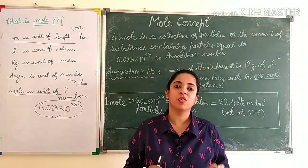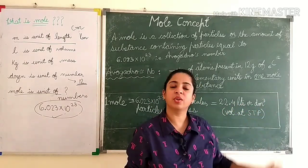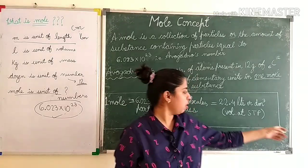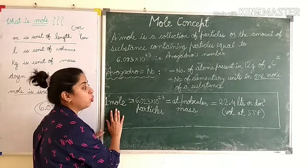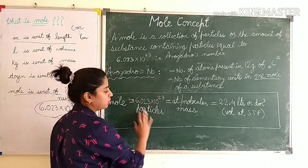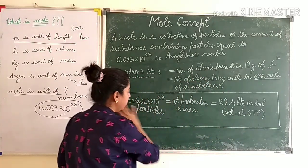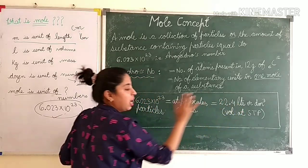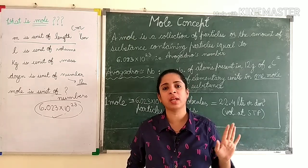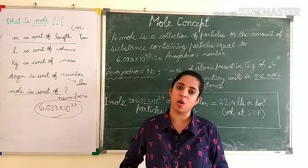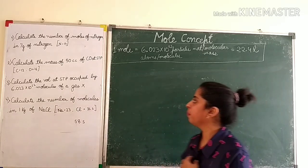So 22.4 liters at STP is the volume for one mole of any gas. Everything is interrelated — mass (atomic or molecular), number of particles (Avogadro's number), and volume at STP all correspond to one mole. We will use simple unitary method to solve all types of sums. Let's go ahead and solve a few examples.